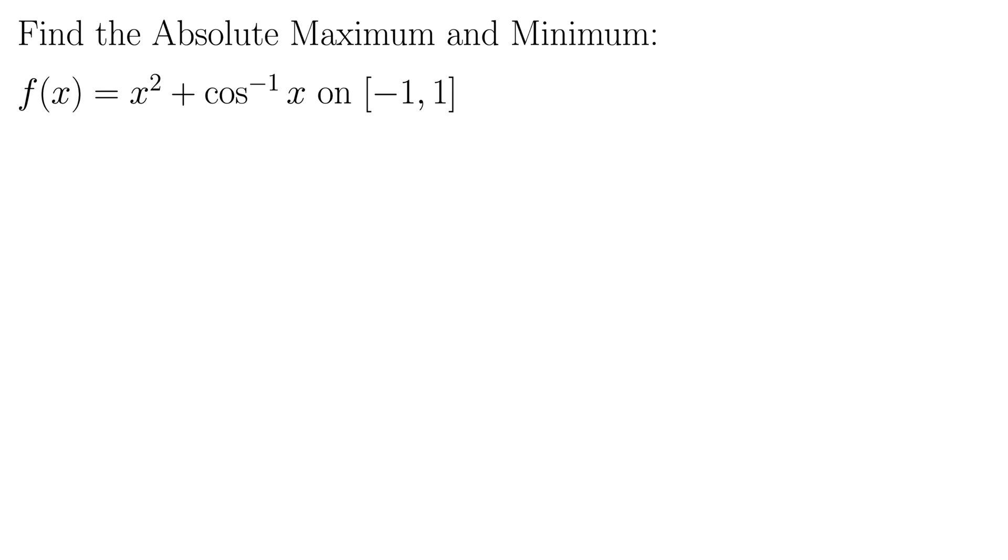Here's one for you to try that involves a little bit of trigonometry. It says find the absolute maximum and minimum for the function f(x) equals x squared plus inverse cosine of x on the interval negative one to one.